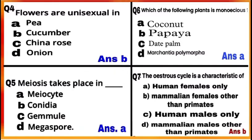Question 5: Meiosis takes place in meiocytes or gamete mother cells and forms gametes. After meiosis, only one set of chromosomes gets incorporated into each gamete.